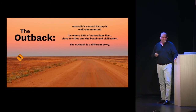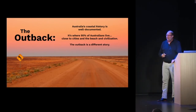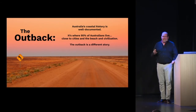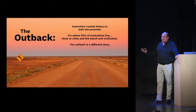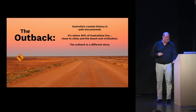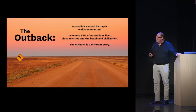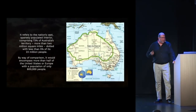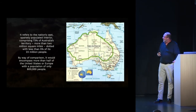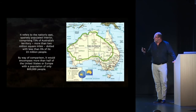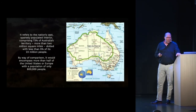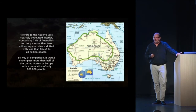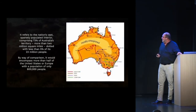Now we'll talk briefly about the Outback. This refers to 73% of Australia's territory — more than 2 million square miles — dotted with less than 5% of its 23 million people. It's about having half the size of the United States or Europe with about 800,000 people. A huge, huge space with very, very few people.